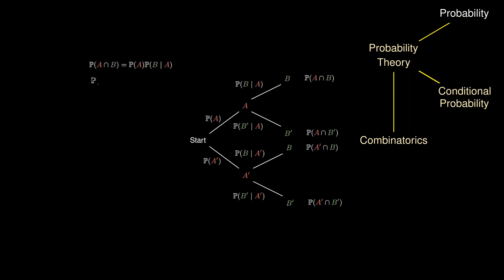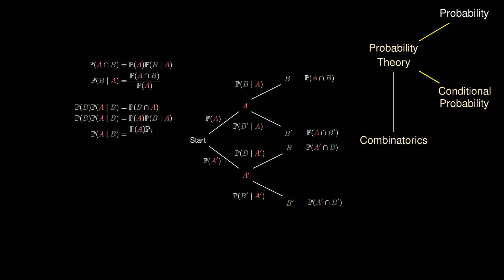Doing a little algebra, we obtain the definition of the conditional probability of B given A. If we swap the A's and B's, we get a similar equation: P(B) × P(A|B) = P(B ∩ A). But A ∩ B and B ∩ A are the same thing, so we can equate the two products. Isolating P(A|B), we obtain the formula for Bayes' theorem, which helps us calculate the probability of A given B in terms of the probability of B given A.